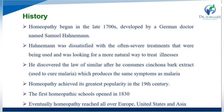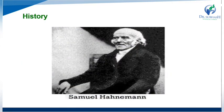Homeopathy achieved its greatest popularity in the 19th century. The first homeopathic school opened in the 18th century. Eventually homeopathy reached all over Europe, the United States, and Asia. This is a picture of the scientist who founded the homeopathic system — Samuel Hahnemann.